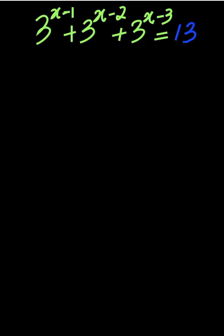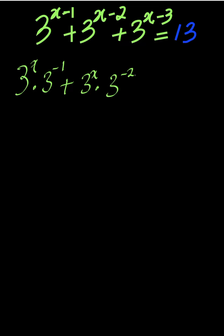We need to find the value of x. This becomes 3 to the power of x multiplied by 3 to the power of negative 1, from the laws of indices, plus 3 to the power of x multiplied by 3 to the power of negative 2, plus 3 to the power of x multiplied by 3 to the power of negative 3, everything equal to 13.